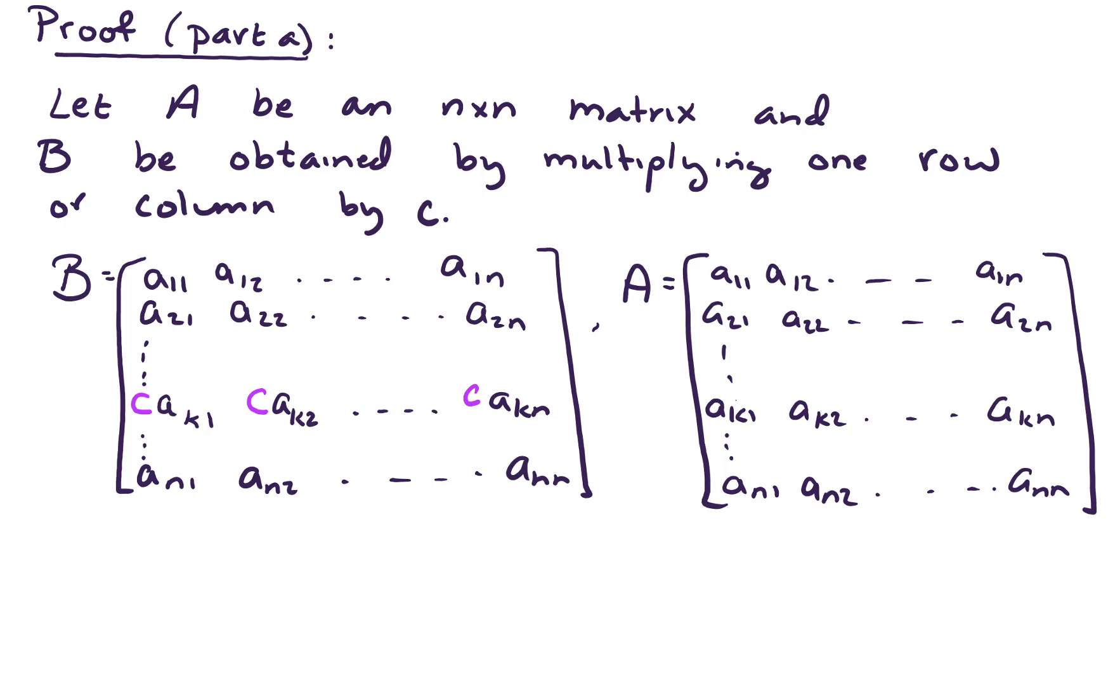Now, what is the determinant of B? If we wanted to compute that, we know from previous work that the determinant of B can be obtained by this expansion along any row or column. So let's expand around row K. So expanding on row K, we have the sum as J equals 1 to N of the elements of B, which look like C times AKJ, so that's Kth row, Jth column, times the minor KJ. And let's put that C in purple just to keep track of how that is playing into our equation here.